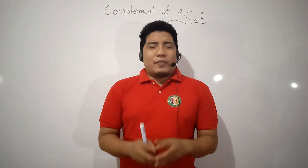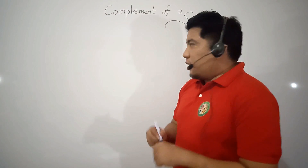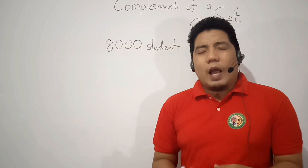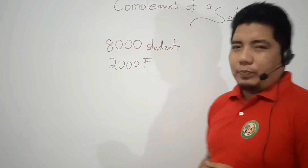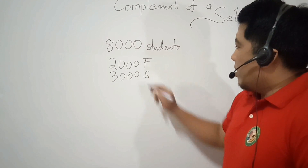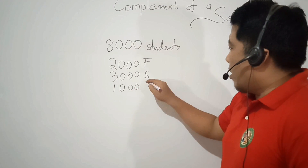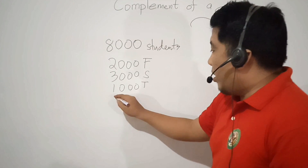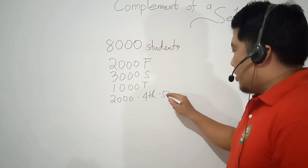First, let's have a quick activity. Suppose in a given university there are 8,000 students. Among these 8,000 students, 2,000 are freshmen — meaning Grade 7 — 3,000 are 2nd year students, while 1,000 are 3rd year students, and the remaining 2,000 are 4th year and 5th year students.